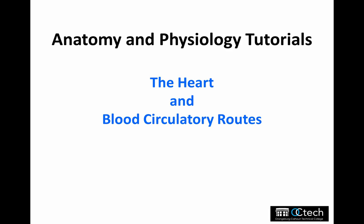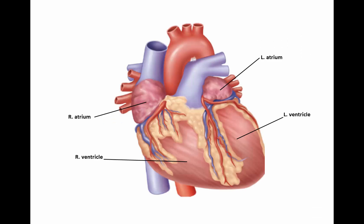Anatomy and physiology tutorials: the heart and blood circulatory routes. In this tutorial we will cover the basics of the human heart and our double circulatory routes, which include the systemic and the pulmonary.